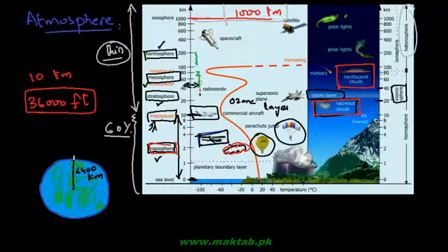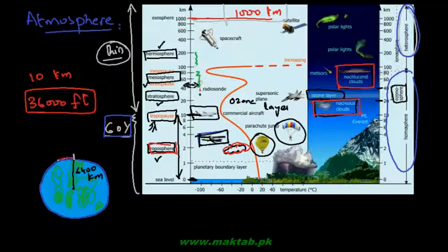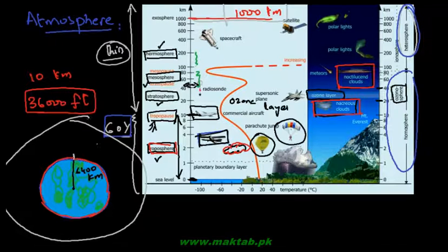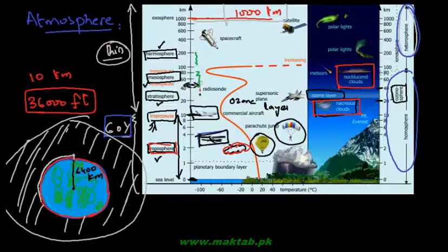So 10 km compared to the full 1,000 km atmosphere would be just a very thin line. Overall, compared to the full size of the earth, the atmosphere is relatively very thin. کچھ لوگوں کا خیال یہ ہوتا ہے کہ atmosphere بہت بڑا ہوگا، actually ایسا نہیں ہے - زمین کا atmosphere comparatively بہت ہی thin ہے overall size of the earth کے نسبت۔